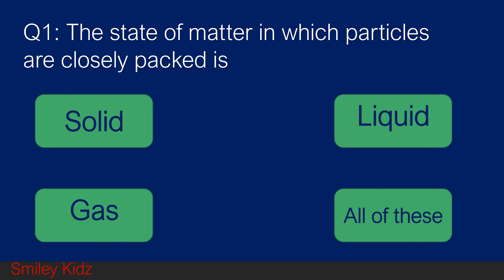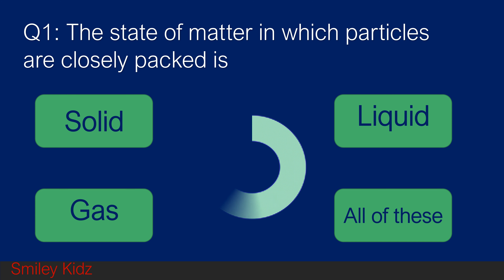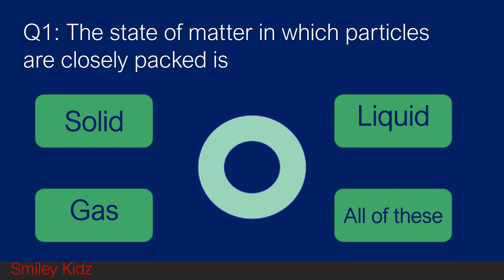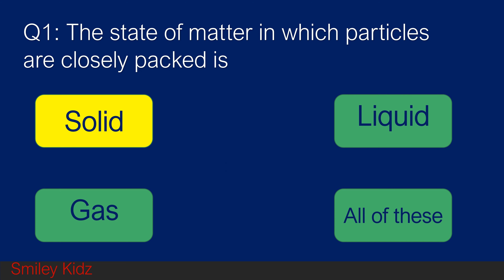Question number 1. The state of matter in which particles are closely packed is: option A solid, option B liquid, option C gas, and option D all of these. Your time starts now. And your time is up. The right answer is solid. The state of matter in which particles are closely packed is solid.